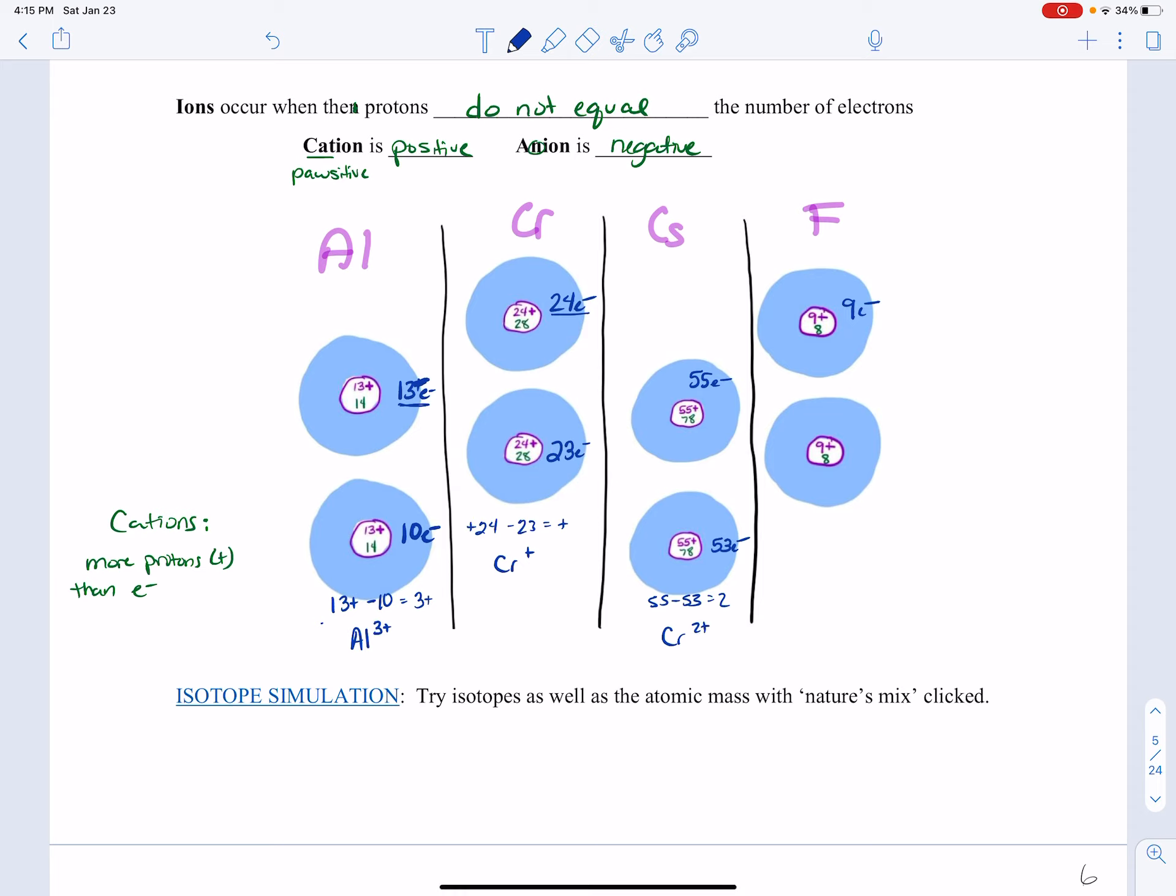And then let's see, in this case, let's try making fluorine positive. So we're going to need less electrons. Nine minus eight electrons. And what that's going to give us is a positive charge, F positive.